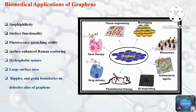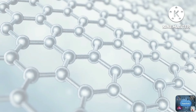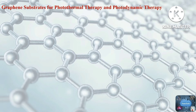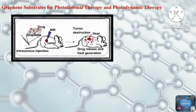The first application is graphene substrate for photothermal therapy and photodynamic therapy. Photothermal therapy is considered a minimally invasive and highly efficient method for cancer treatment. It utilizes a photothermal laser which converts light into heat by non-radiative decay under laser irradiation. When the excited molecule returns to the ground state, it releases energy in the form of heat.